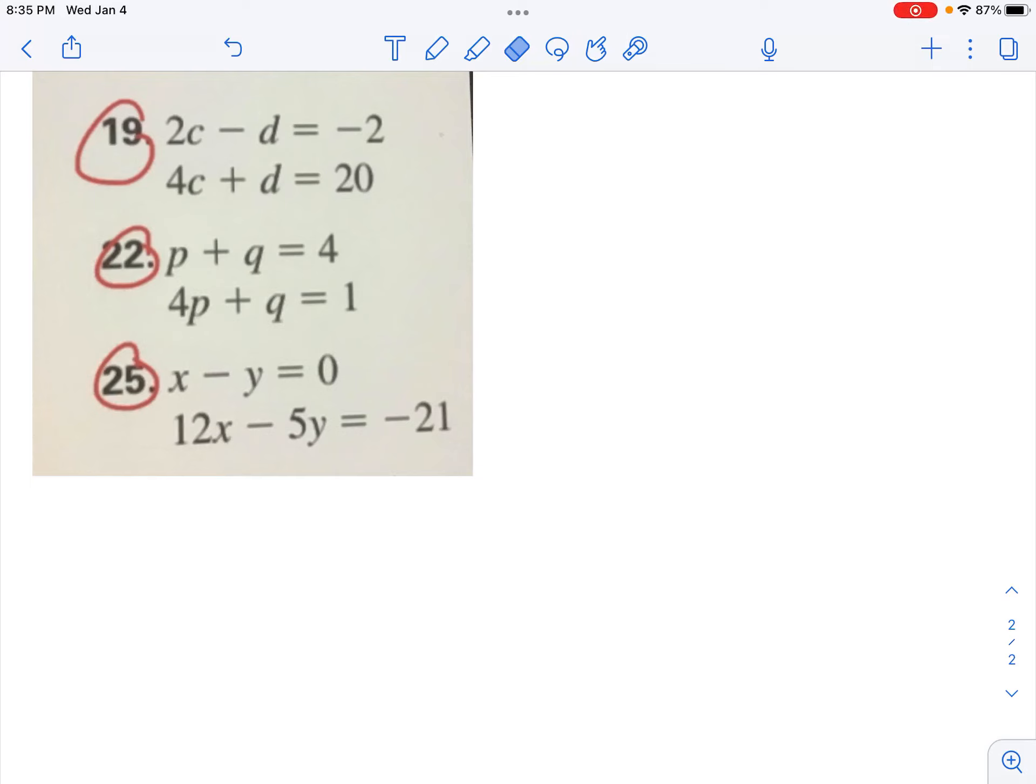We're going to take a look at number 22. We have p plus q equals 4, 4p plus q equals 1.